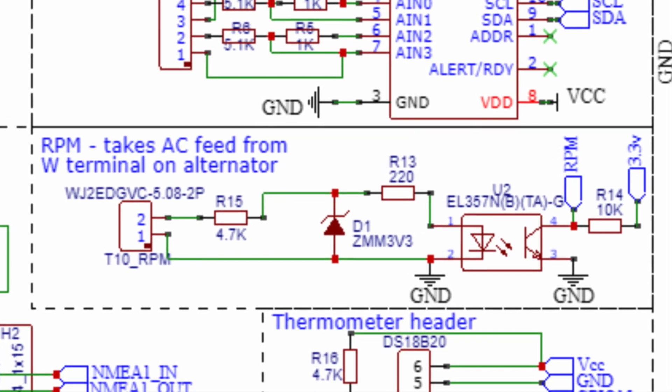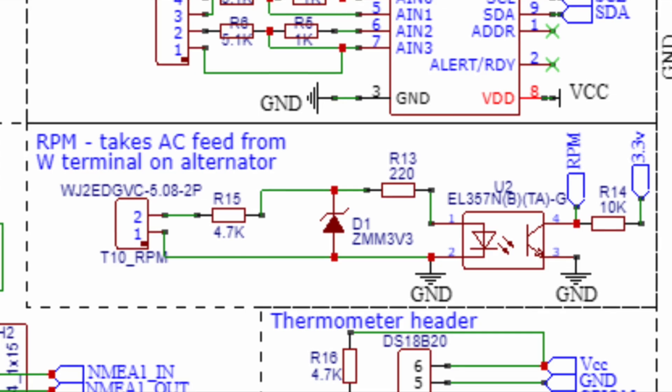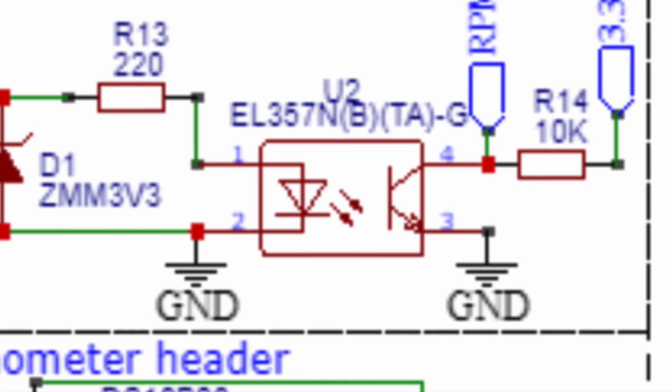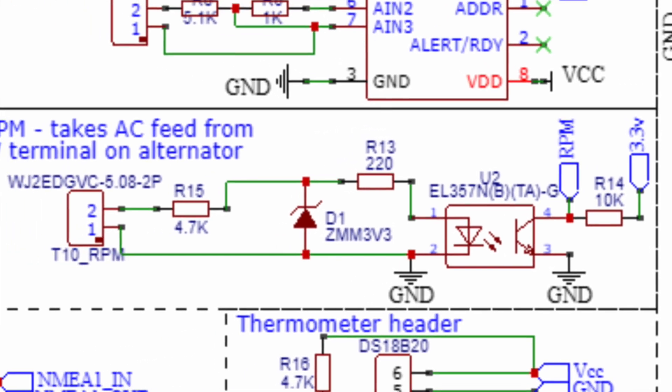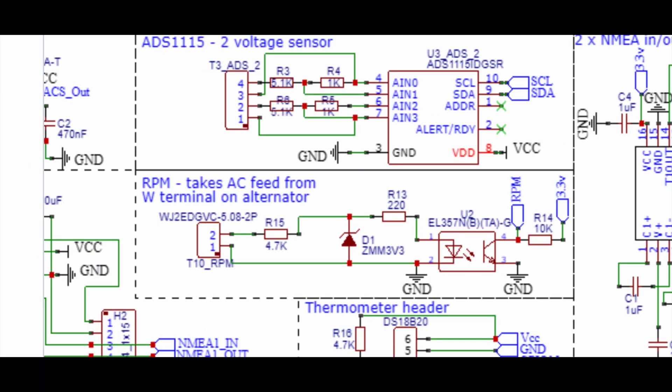The different circuits look quite similar but this one in particular looks quite good because there's a break here with this optocoupler which uses light to transfer the signal from one part of the circuit to another, meaning that everything on the ESP would be separated from everything on the alternator. That means I can just disconnect it if it doesn't work correctly or something goes wrong.